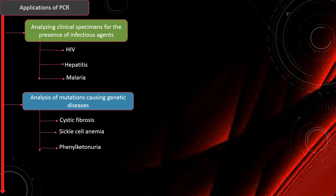Applications of PCR include analyzing clinical specimens for the presence of infectious agents such as HIV, Hepatitis, and Malaria. It's also used for analyzing mutations causing genetic diseases including Cystic Fibrosis, Sickle Cell Anemia, and Phenylketonuria.